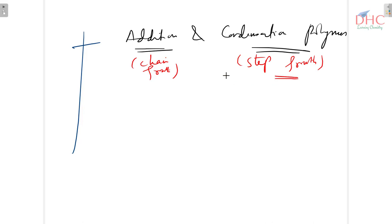So we have chain growth polymers or addition polymers, we have step growth polymers or condensation polymers. And the phenomenon of polymerization is called as addition polymerization or we can say condensation polymerization.